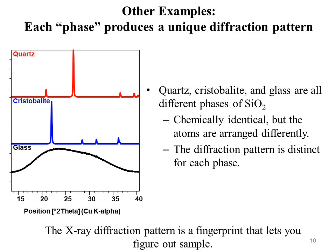The next example is that each phase produces a unique diffraction pattern. A phase is a specific chemistry and atomic arrangement. Quartz, cristobalite, and glass are all different phases of silicon dioxide — chemically identical but with atoms arranged differently. The X-ray diffraction pattern is distinct for each different phase. Amorphous materials like glass do not produce sharp diffraction peaks.